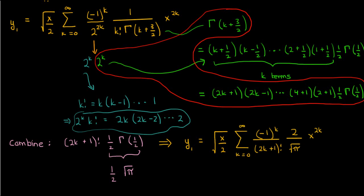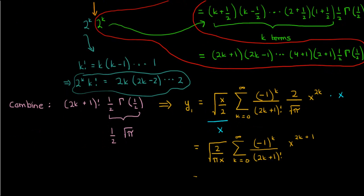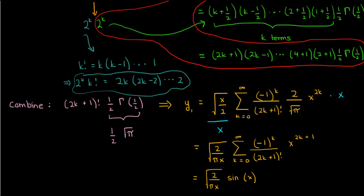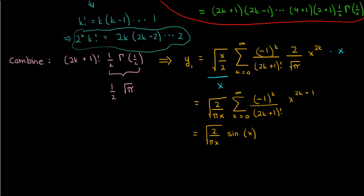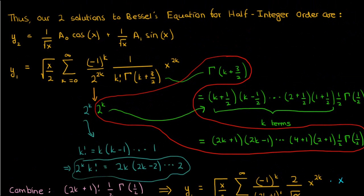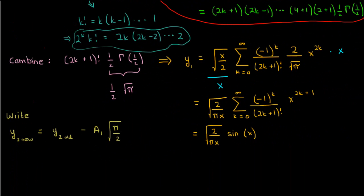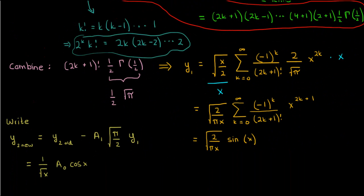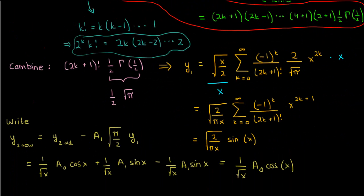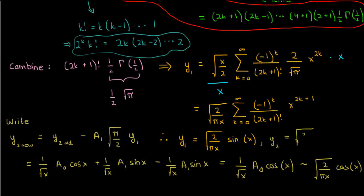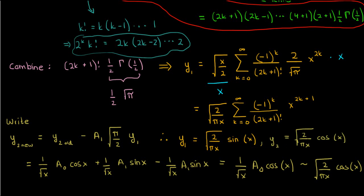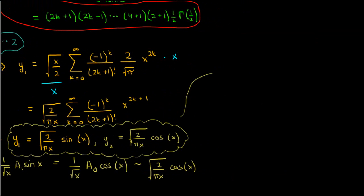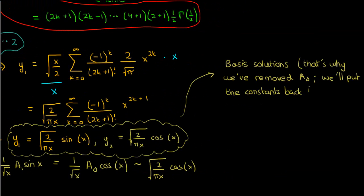Taking out 2 over square root of pi and multiplying by x inside the summation while dividing by x outside, the summation term becomes just sine x, so y1 equals the square root of 2 over pi times sine x divided by x. Since Bessel's equation is a linear ODE, any linear combination of y1 and y2 is still a solution. Rewriting the second solution by subtracting A_1 times square root of pi over 2 times y1 eliminates the sine term, leaving just cosine. Setting A_0 equal to the square root of 2 over pi gives two clean solutions: one involving sine and one involving cosine.